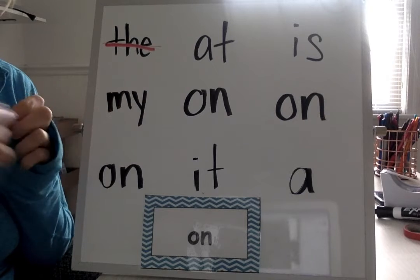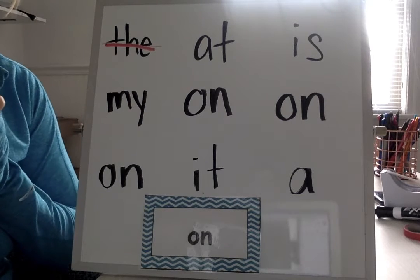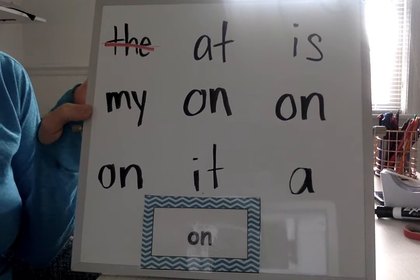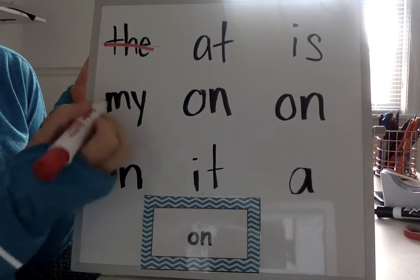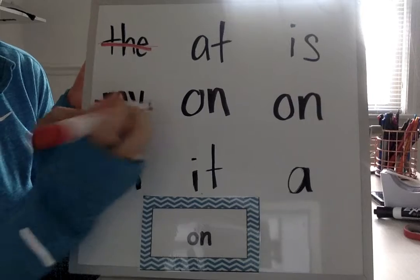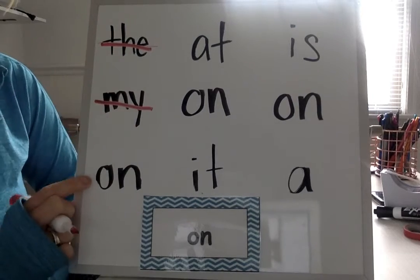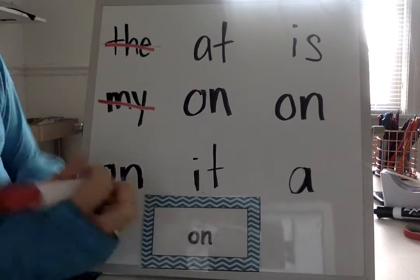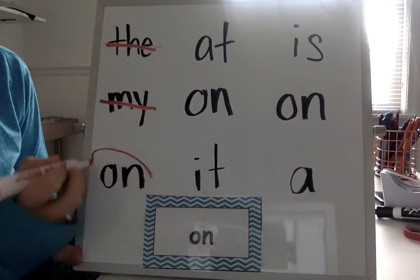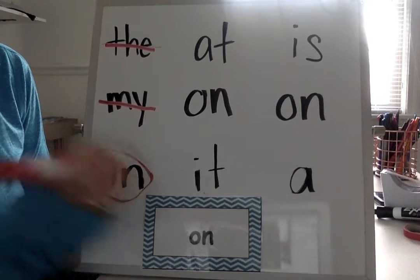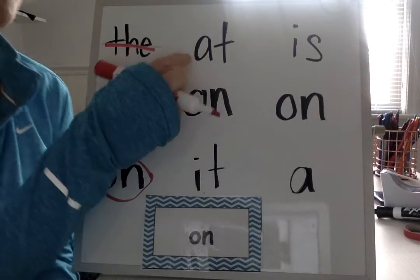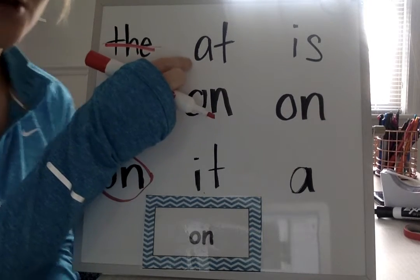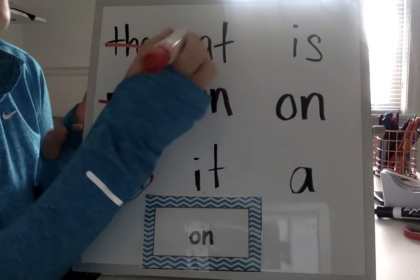What about this one? Is that the word on? No. What word is that? My. Very good. What about this? Is this the word on? Yes. It's the same — O-N. There's our word on. Very good. What about this? Is this the word on? No, that is the word at.